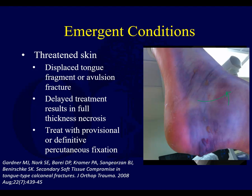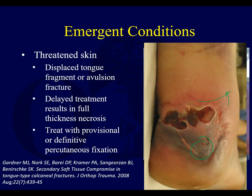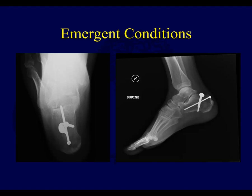Here you can see a case where that skin compromise has been developing — in the posterior part of the heel. What you don't want is to let it get to the point where you're already getting skin necrosis and epidermal slough and perhaps some full-thickness skin loss in that central area. These can be reduced and pinned, but it's not extraordinarily difficult to fix these emergently with screw fixation, get a satisfactory reduction, and prevent the skin from dying at the same time.